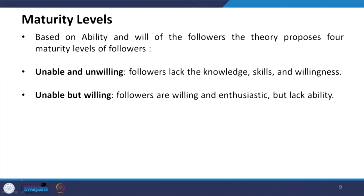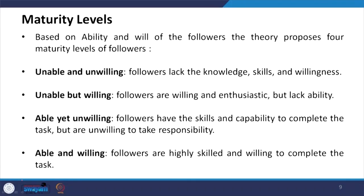The appropriate leadership style must be adopted based on the follower's knowledge, skills, and willingness — the KSA framework: Knowledge, Skill, and Attitude, where willingness is the attitude. If knowledge, skill, and willingness are low, you go for the autocratic style. Unable but willing means followers are enthusiastic but lack ability — this calls for the Selling or sharing style. Able yet unwilling calls for the Participating style. Able and willing calls for the Delegating style.